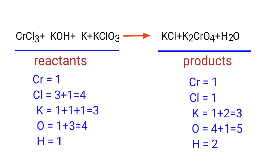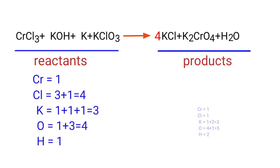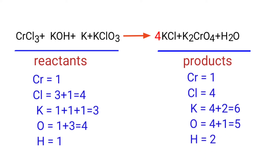In this equation, we need to balance the chlorine atoms first. To do this, we need to put a coefficient of four in front of KCl. The chlorine atoms are now balanced.